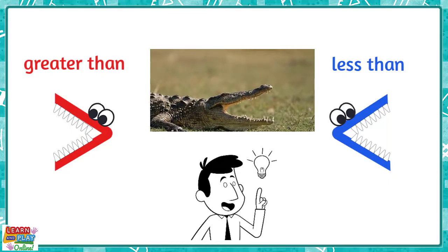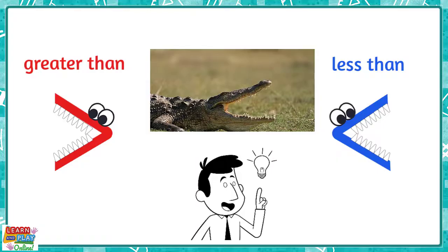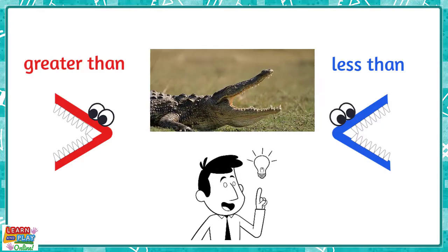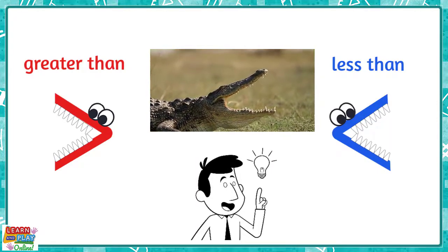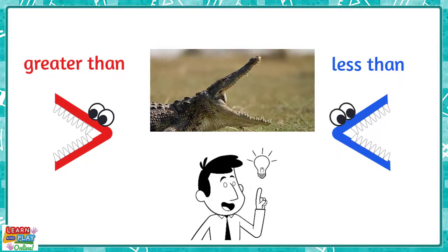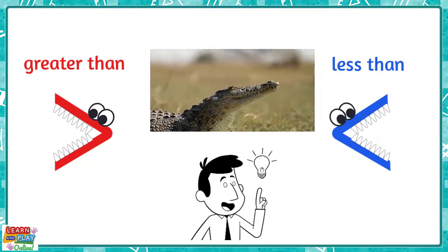Imagine that the symbols are actually the mouth of a crocodile. The crocodile will always want to eat the side that has more. So you always want to make sure that you are drawing the open mouth of the crocodile facing the number that is greater.